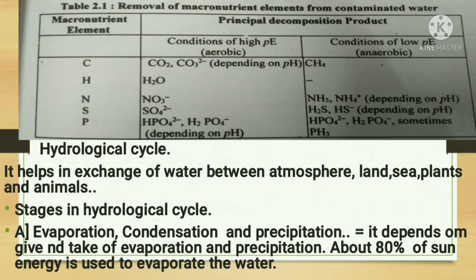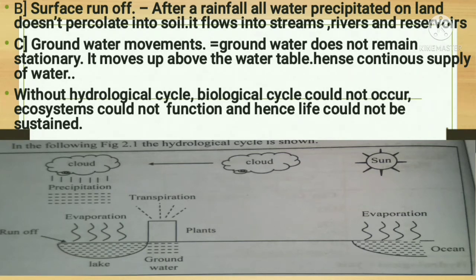Water vapor condenses on dust particles, nuclear particles, spores, pollen grains, or fine mineral particles. The second stage is surface runoff: after rainfall, not all rain water precipitating on land percolates into the soil. Some water flows into streams, rivers, lakes, and reservoirs.